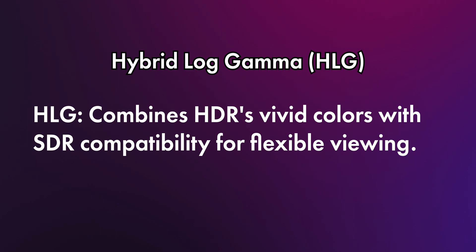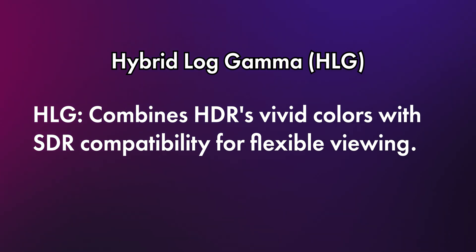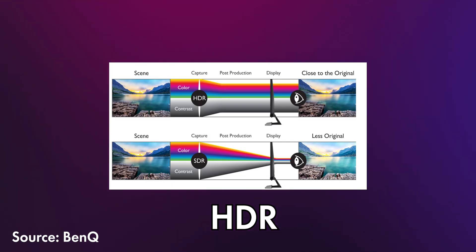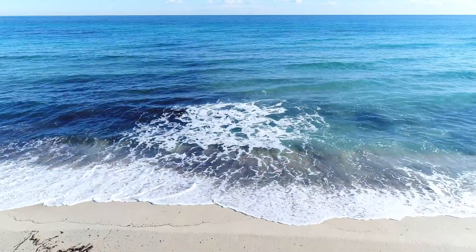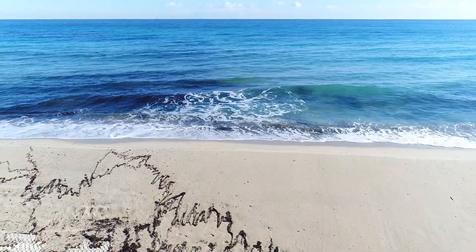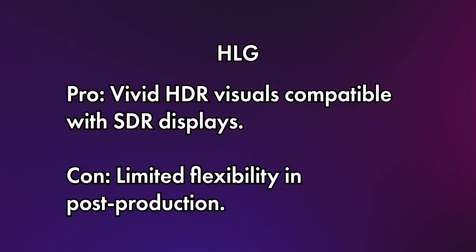Let's talk about HDR HLG, or Hybrid Log Gamma. HLG is a gamma curve designed for high dynamic range content while maintaining backward compatibility with SDR displays. It's unique because it allows you to shoot HDR footage without requiring extensive post-production, and it's ideal for platforms like YouTube that support HDR playback. So if you're filming a travel vlog with vibrant landscapes and want to showcase the full spectrum of colors and brightness on an HDR-capable TV, HLG lets you deliver HDR content without extensive grading. That said, HLG doesn't offer as much flexibility in post as CLog3, and its compatibility with SDR displays can sometimes lead to inconsistent results.